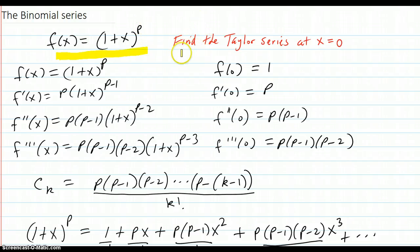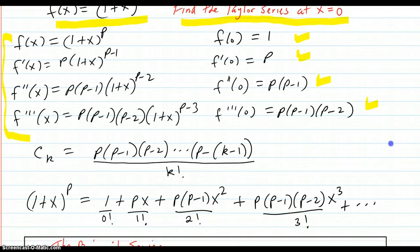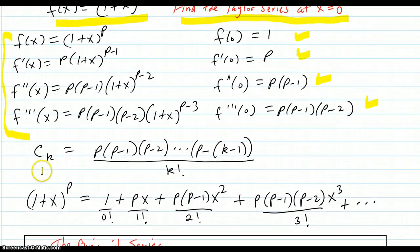So we're going to find the Taylor series at x equals 0 of this function. We do our normal derivatives so we see a pattern evaluated at x equals 0. Then the coefficients, the c_k, are going to be those values with that pattern. Notice that it goes to p minus 1, and that's a 2 up there. p minus 2, and that's a 3 up there. So it goes to p minus 1 less than the k. Starts at p and multiplies down to that.